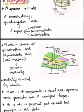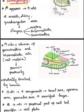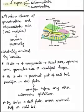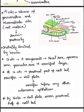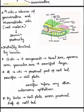Around nine weeks, a column of germinative and intermediate cells resembling the nail matrix appears, which further proceeds downwards proximally into the dermis and is distally limited by the lunula. Around 13 weeks, four components are present.